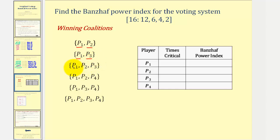For the coalition with players one, two, and three: if player one leaves, players two and three have a weight of ten, which does not meet quota — player one is critical. If player two leaves, the weight would be twelve plus four, which is sixteen, and does meet quota — so player two is not critical. If player three leaves, the remaining weight would be twelve plus six or eighteen, which does meet quota — therefore player three is not critical.